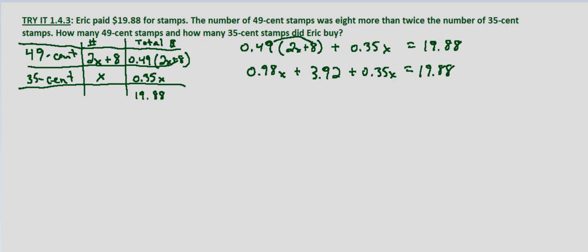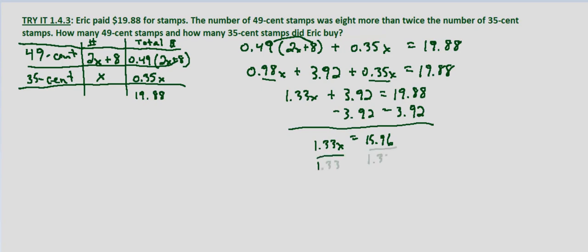Combining like terms, we get 1.33x from 0.98x plus 0.35x. We still have the 3.92. Subtracting 3.92 from each side leaves us with 1.33x on the left-hand side and 15.96 on the right-hand side. Dividing by 1.33, we get x equals 12.